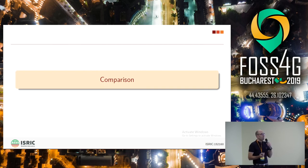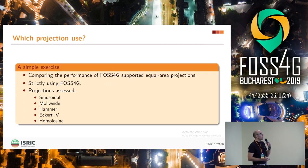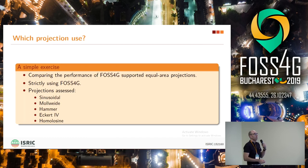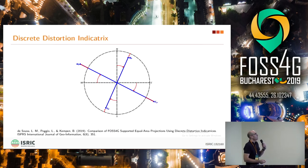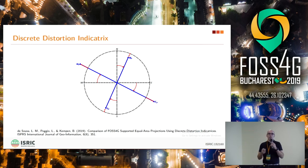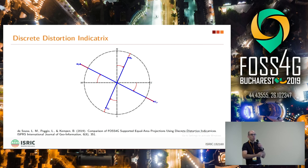So I was faced with the question: which projection should I use? Which one is really the best for my use case? I did a comparison selecting five projections that more or less trace the history of equal area projections up to the beginning of the 20th century. To do this assessment, I used a construction I call the discrete distortion indicatrix, inspired by Tissot's indicatrix but something much simpler.